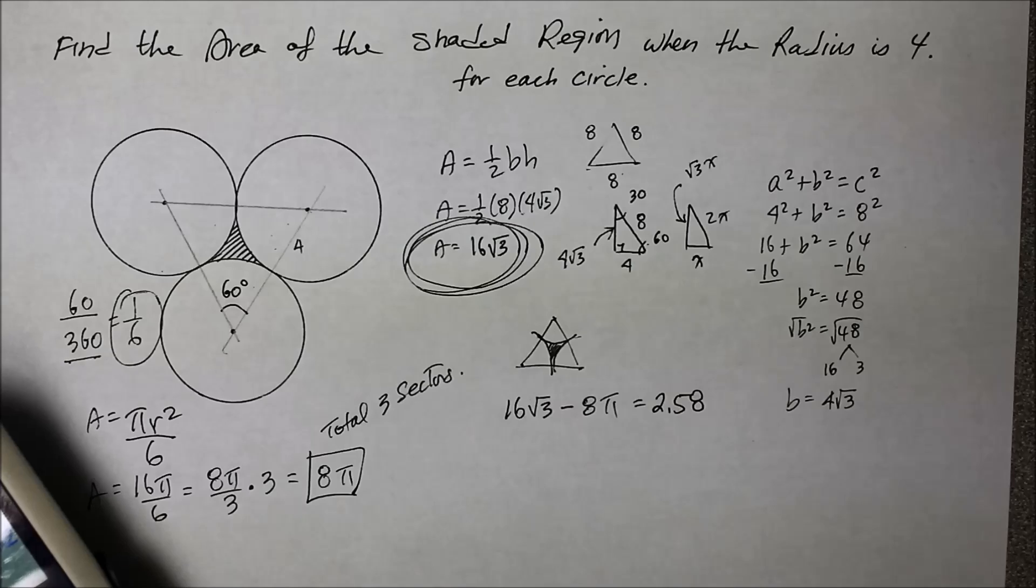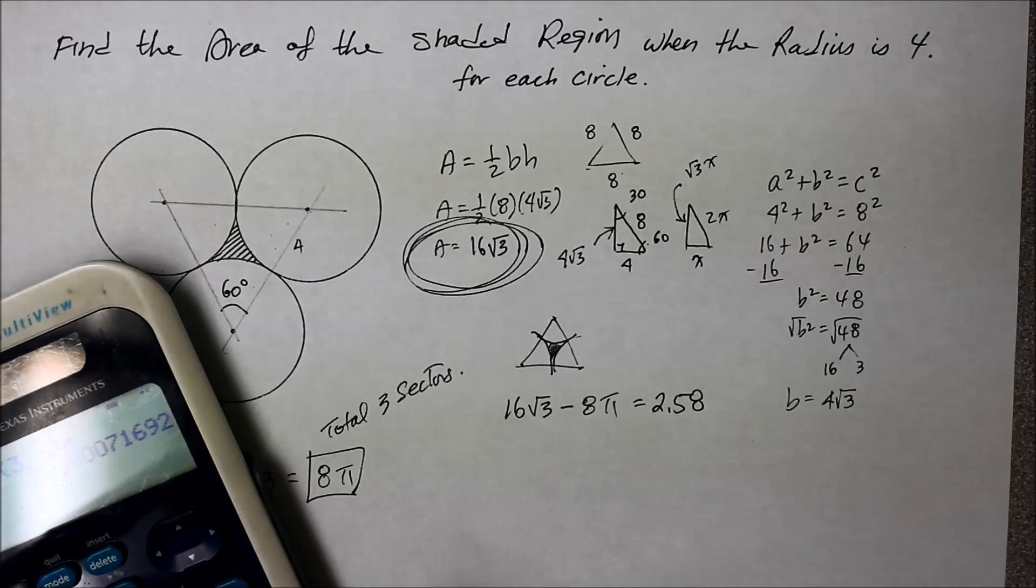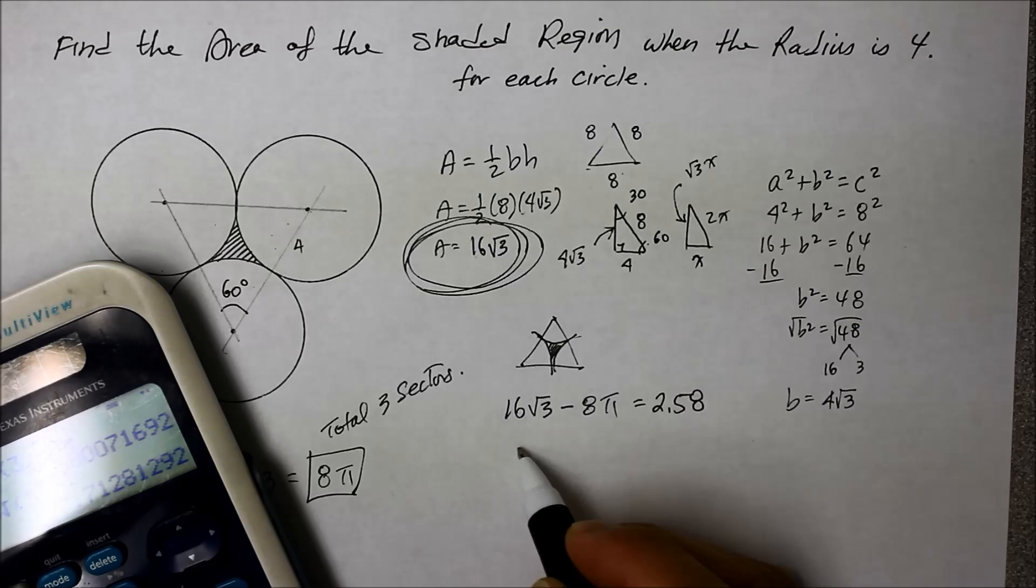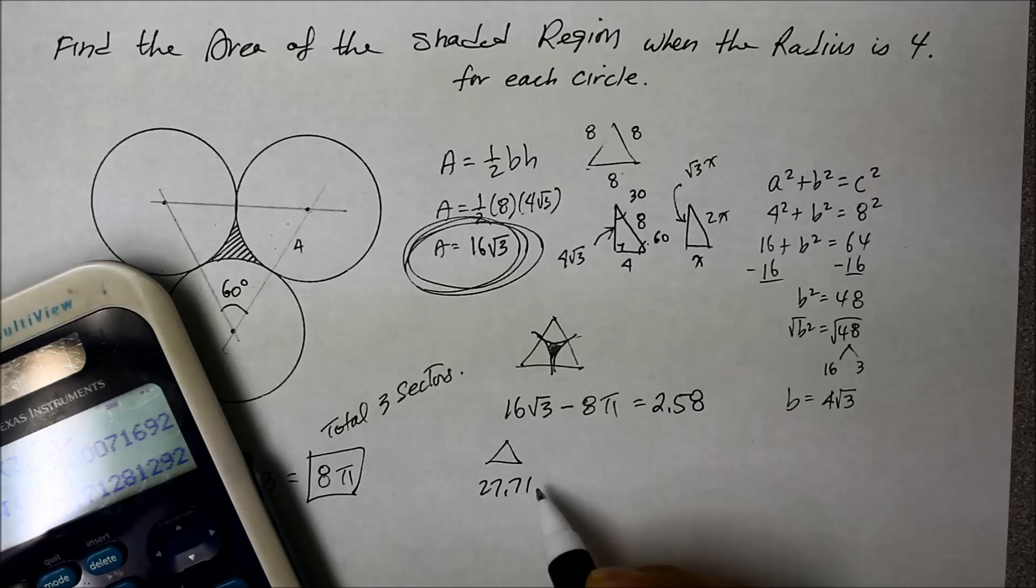It says 2.58 approximately. 2.58. Let's get an idea what that is like. 16 square root of 3, because I'm not very satisfied. 16 square root of 3 is approximately 27. That's the triangle. The triangle is 27.71, something like that.